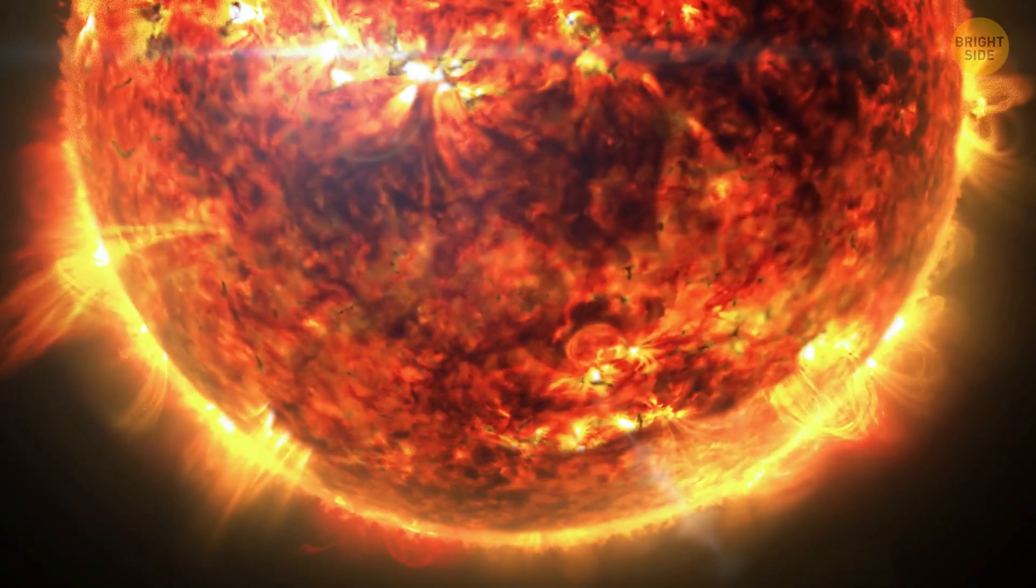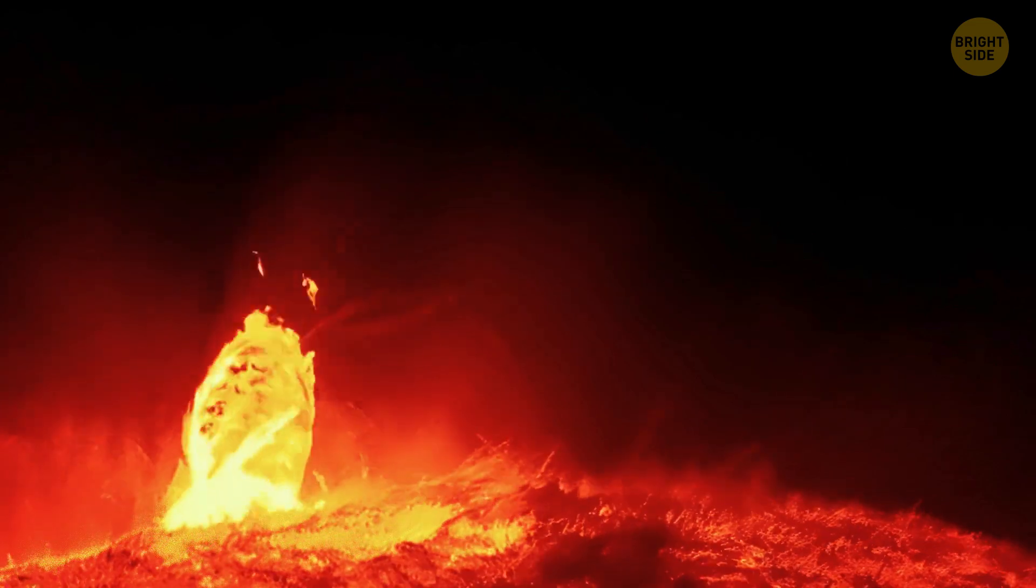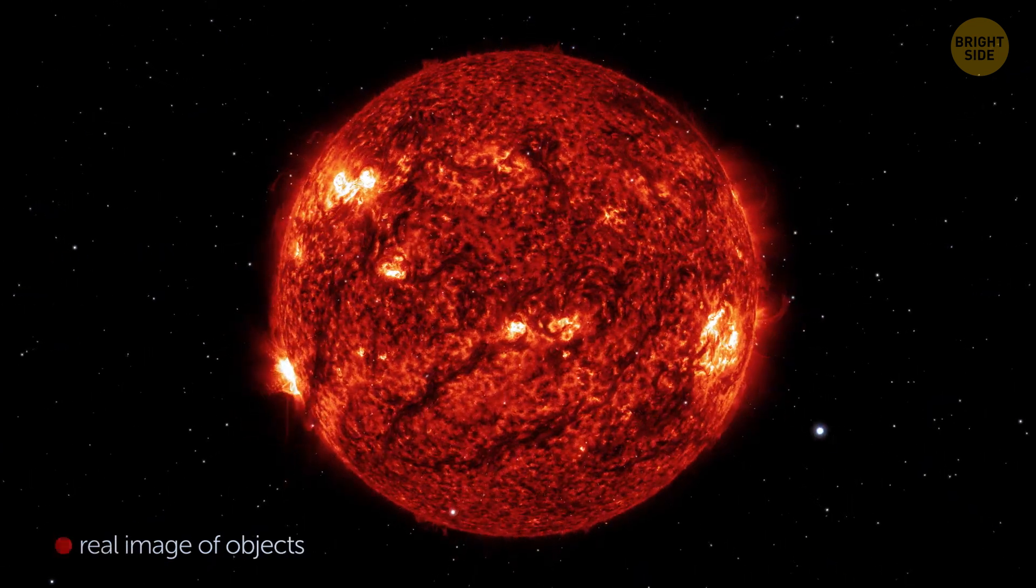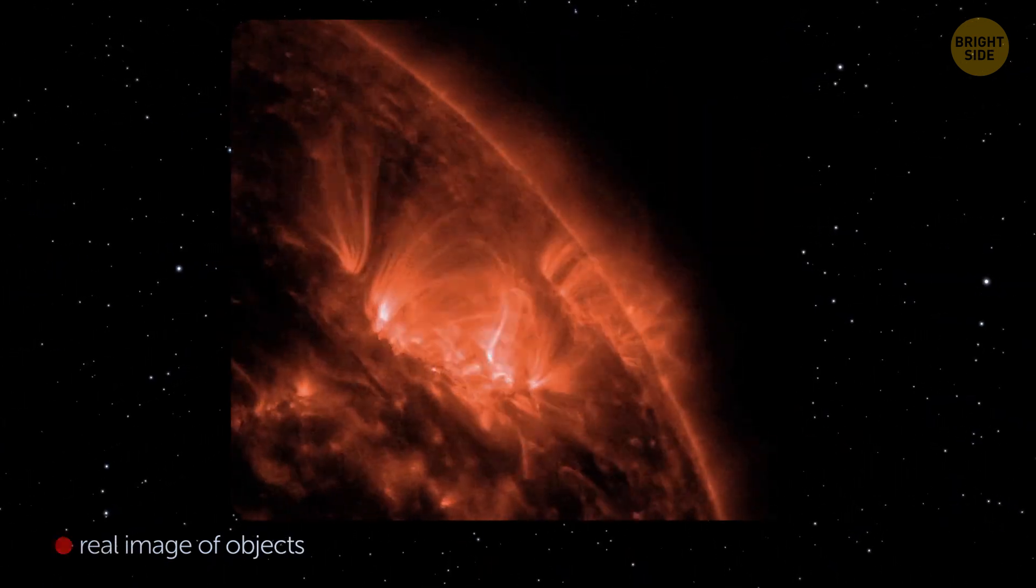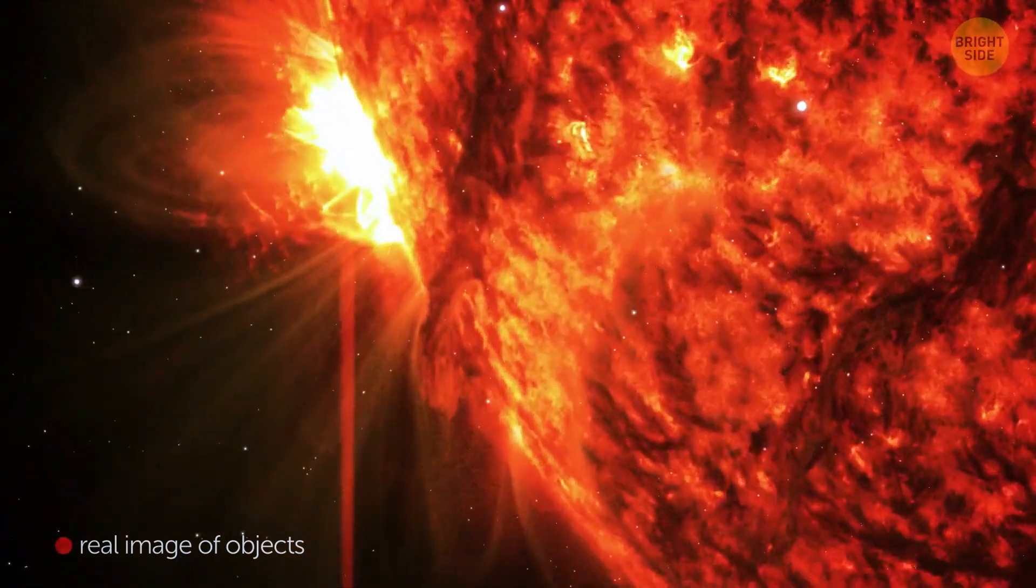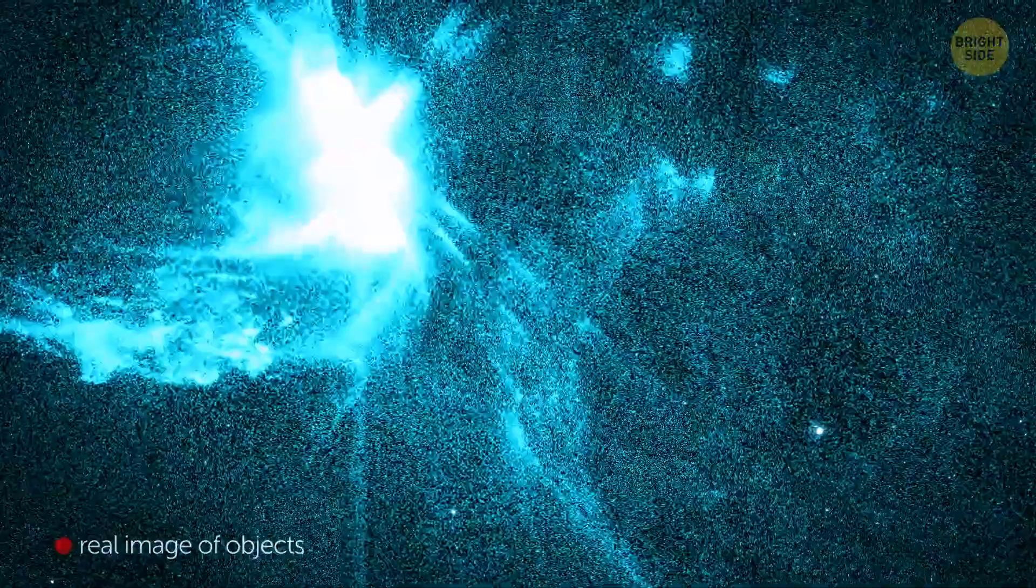Solar flares are extremely powerful bursts of electromagnetic radiation that can last from minutes to hours. They occur when there's some magnetic disturbance in the Sun. Then, magnetic field lines in the atmosphere of our star get tangled and snap. This releases giant amounts of excess energy, including ultraviolet radiation and intense X-rays.